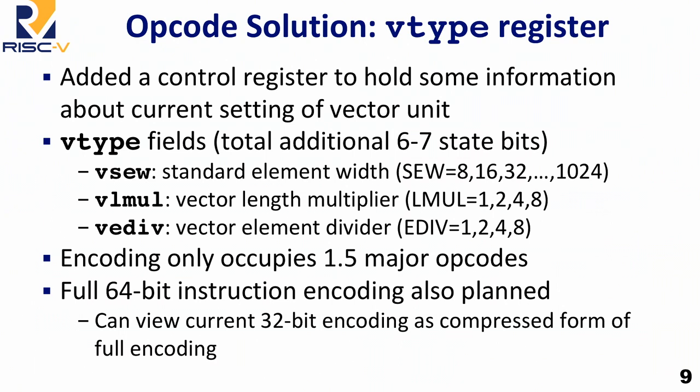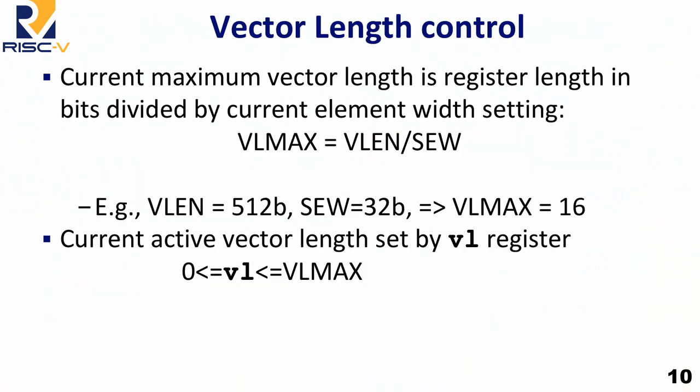One thing to think about: we actually view the 32-bit encoding as really a compressed form of the full 64-bit encoding, which we should be defining as well. That 64-bit encoding will allow you to do everything in one go without having to set a register first.